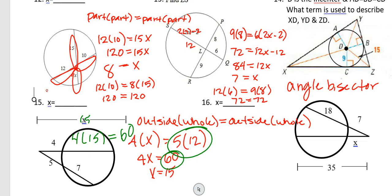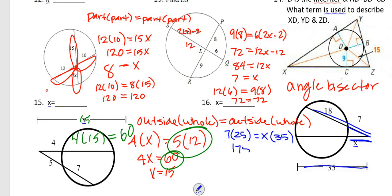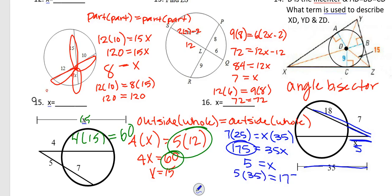For number 16, outside times whole: the outside is 7 and whole is 7 + 18 = 25; the other outside is x and whole is 35. So 7 times 25 = 175 = 35x, and x = 5. Checking: 5 times 35 is 175, and 175 equals 175 — correct.